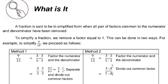A fraction is said to be in simplified form when all pairs of factors common to the numerator and denominator have been removed. To simplify a fraction, we remove a factor equal to 1. This can be done in two ways. For example, to simplify 9 over 15, we proceed as follows.